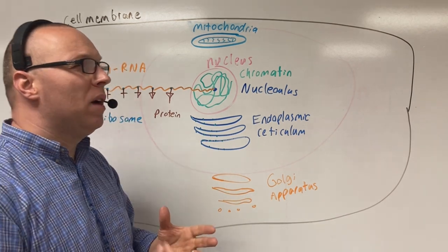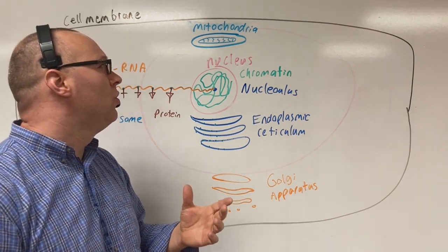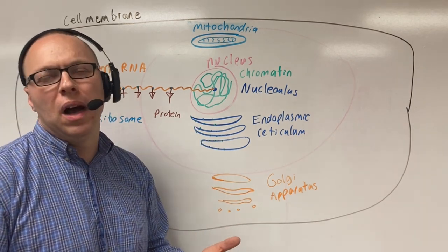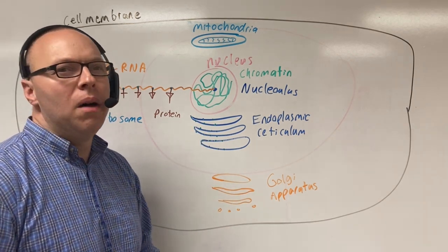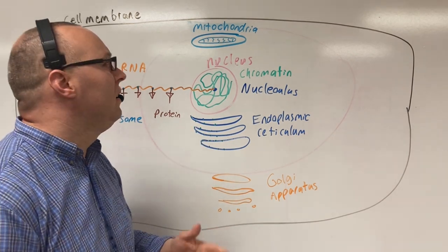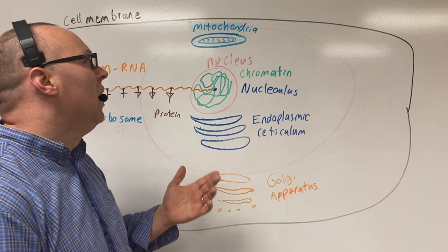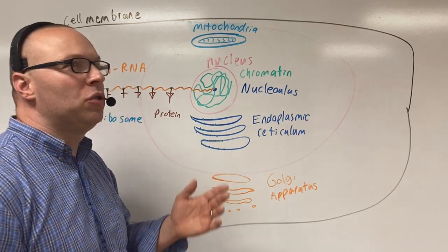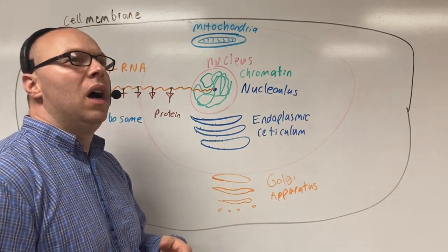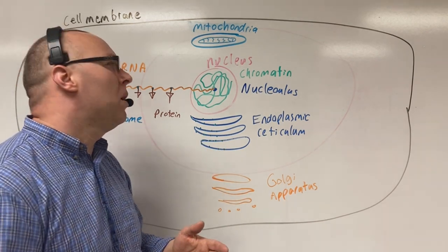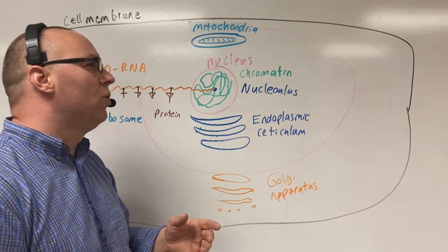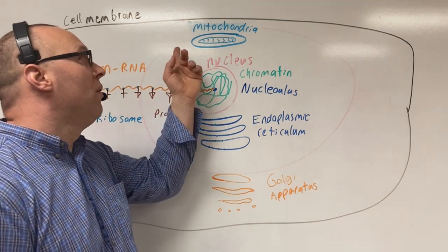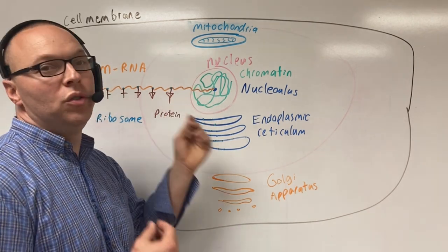We can break down some sugar without the mitochondria, but we don't do a very good job. We'd easily need 16 to 17 times the amount of sugar to get the same amount of energy without mitochondria versus with mitochondria.